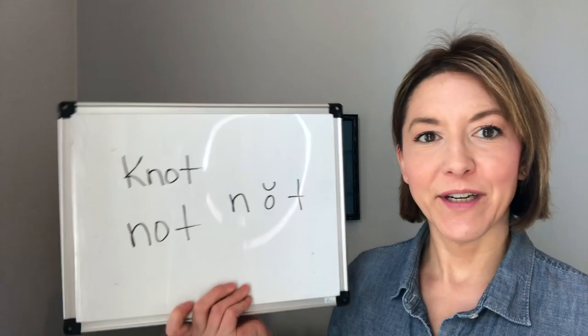Hi everyone, Jennifer from Tarle Speech with your Two for Tuesday. Today's two words that are pronounced exactly the same are knot, a tangled mass, and not, which is stating a negative or no. So here are our two words.